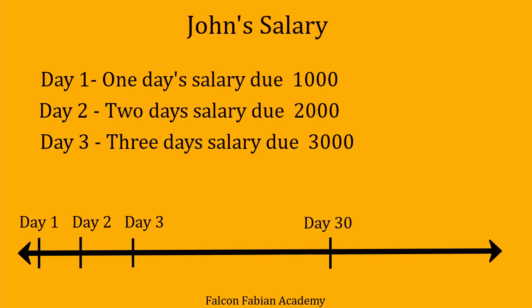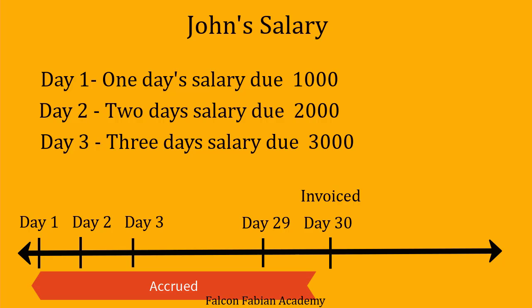Though the expense is being incurred on a daily basis, the business does not need to pay it on a daily basis — it would be paid at the end of 30 days. An expense that has been incurred but not yet due is termed as an accrued expense. So John's salary till day 29 is going to be an accrued expense. The moment he works day 30, an invoice is raised and the expense becomes due. Till the invoice is not raised, the expense is not due, and such expenses are termed as accrued expenses.